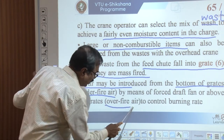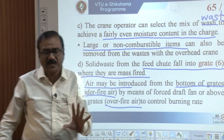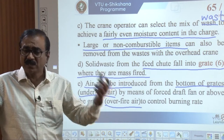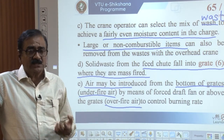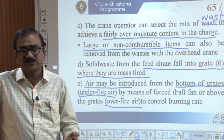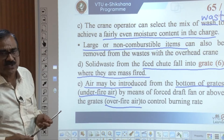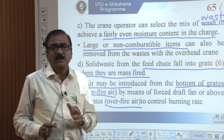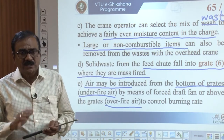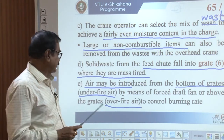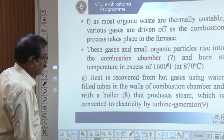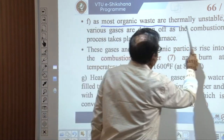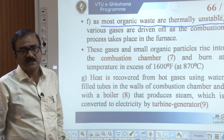Air can also be supplied over the grates — this is called over-fire air — to control the burning rate. The supply of air is very important; the quantity of air to be supplied depends upon the chemical properties of the commingled solid waste being subjected to burning. One must ensure that under any circumstances the air supplied is sufficient enough to control the burning rate.